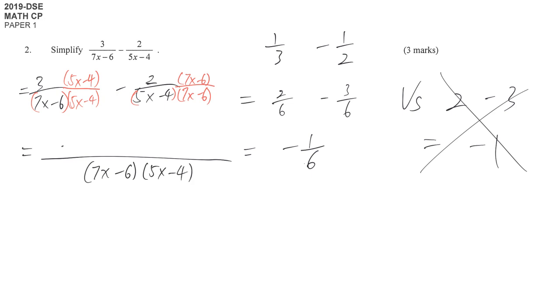The numerator is 3 times (5x minus 4) minus 2 times (7x minus 6). One thing to remind you, don't forget to write down the bracket here. Because we multiply the whole thing times the whole thing here. Otherwise, for example, if you didn't write this bracket, I would think it's just negative 6 times this, but not 7x.